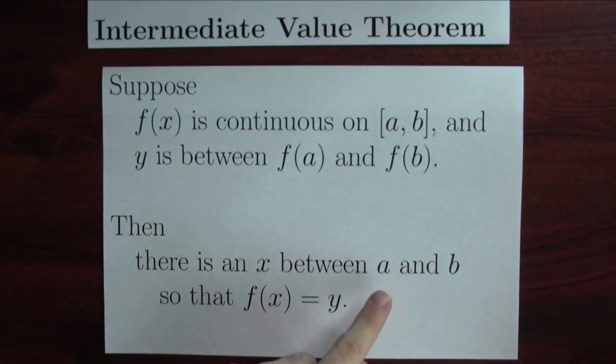Then, there's an x between a and b, so that the function's output, when you plug in x, is equal to y.